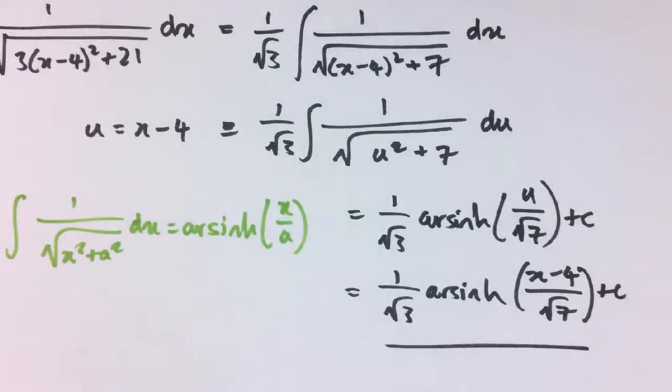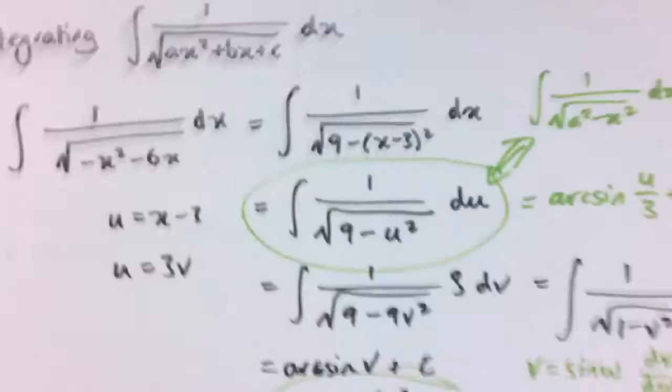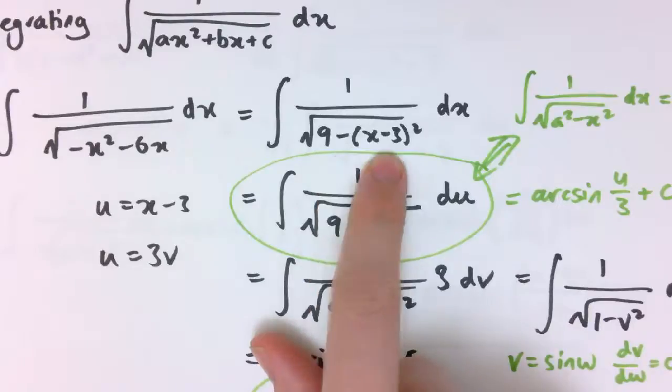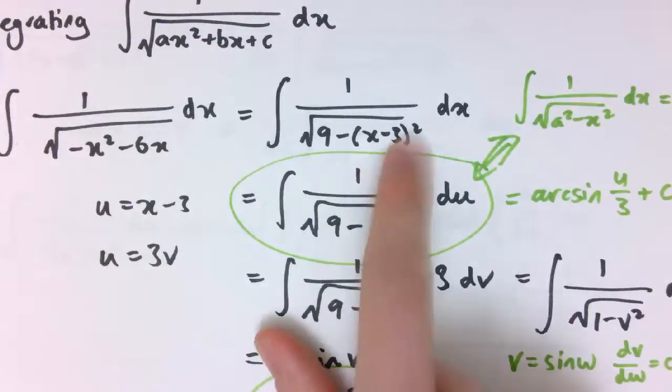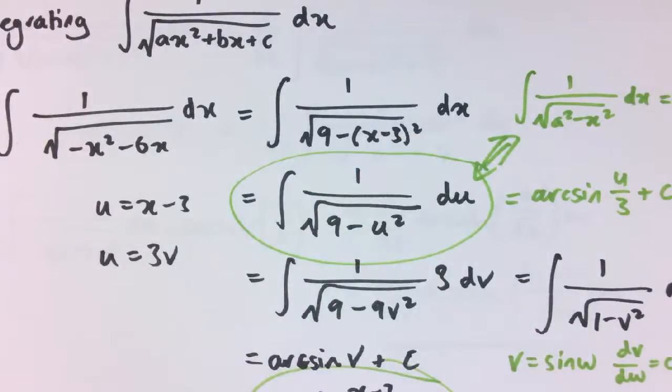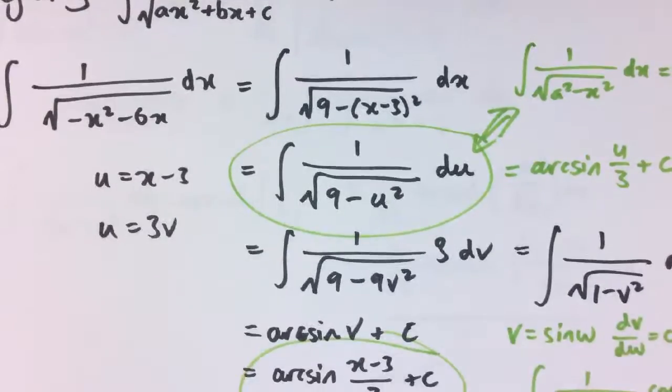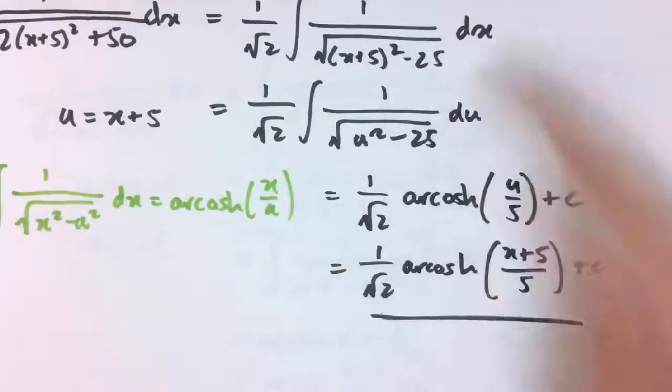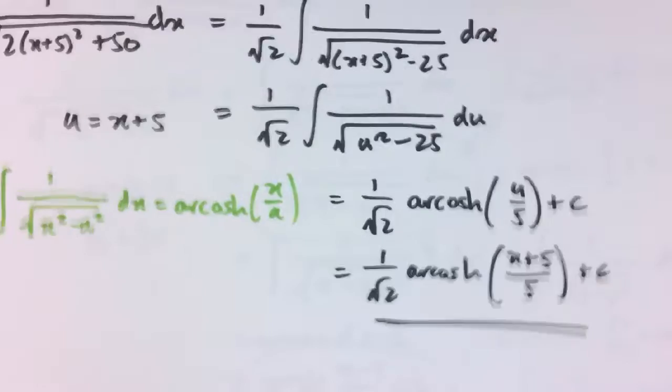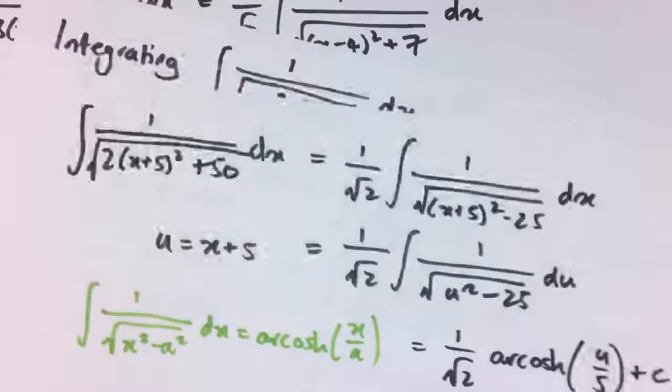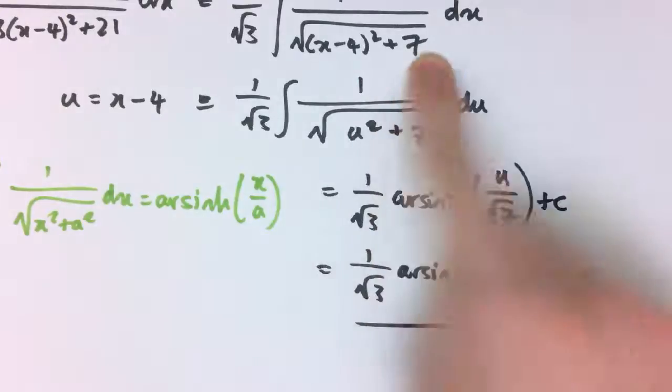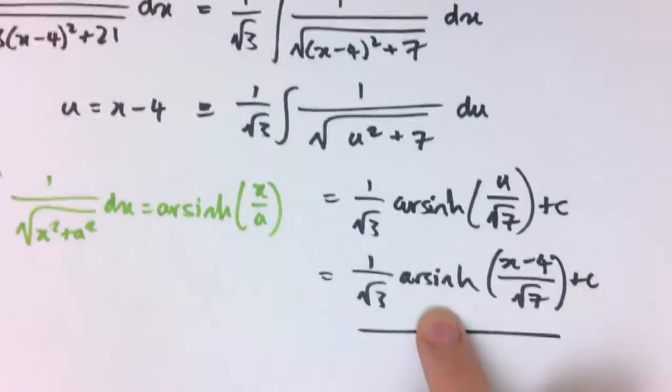And now you may have noticed that each of those three examples was of a slightly different completed square form. So in the first one here we had a number minus (x minus a number) squared, and that led to an arcsin answer. In the second one we had the x part squared minus a number, and that led to an arccosh in the answer. And the final one we had the x part plus a constant, and that led to an arsinh answer.